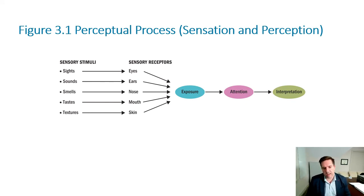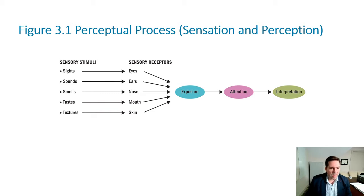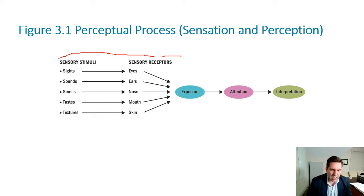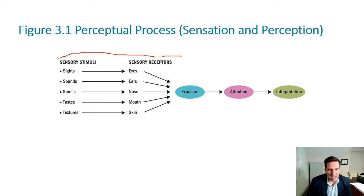Let me put a slide here — the book places this later in the process, but I think it's useful to understand what perception is. Perception is going to have two aspects: on one hand, everything that deals with sensation — things you can actually physically sense through your five senses.